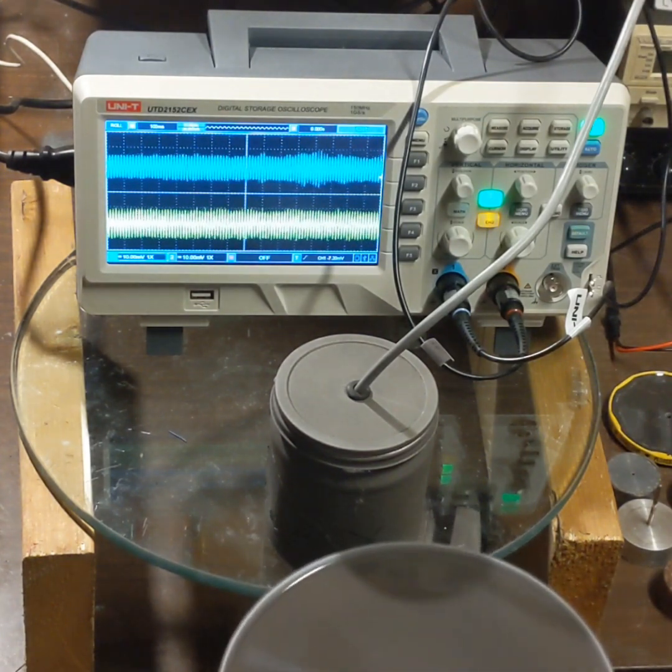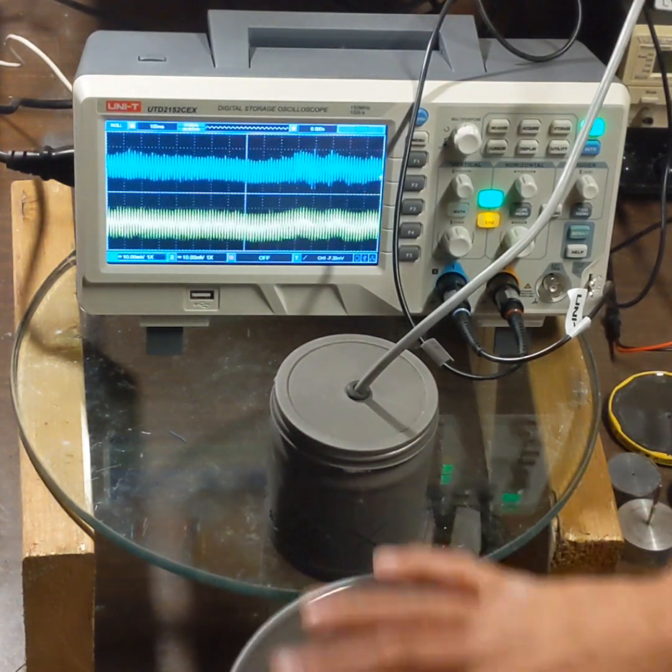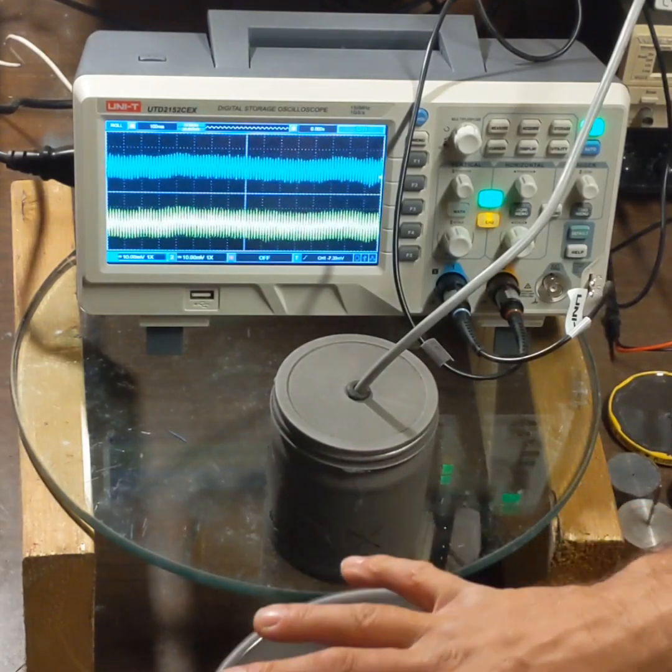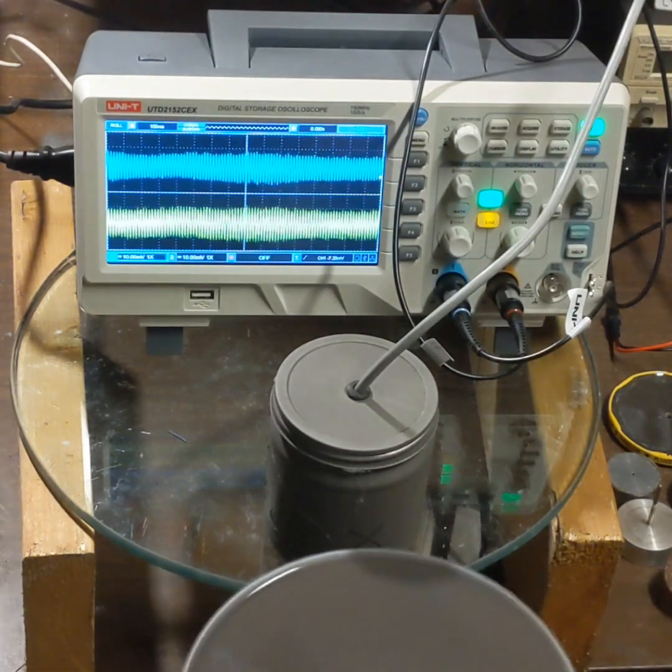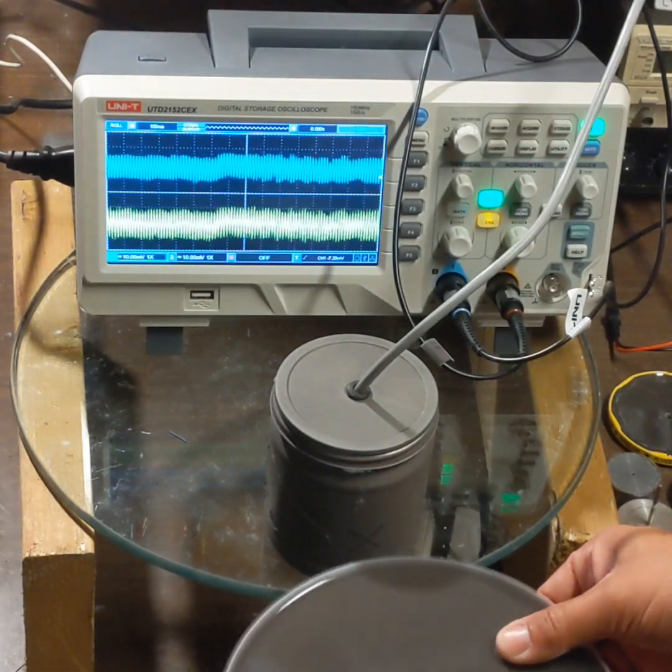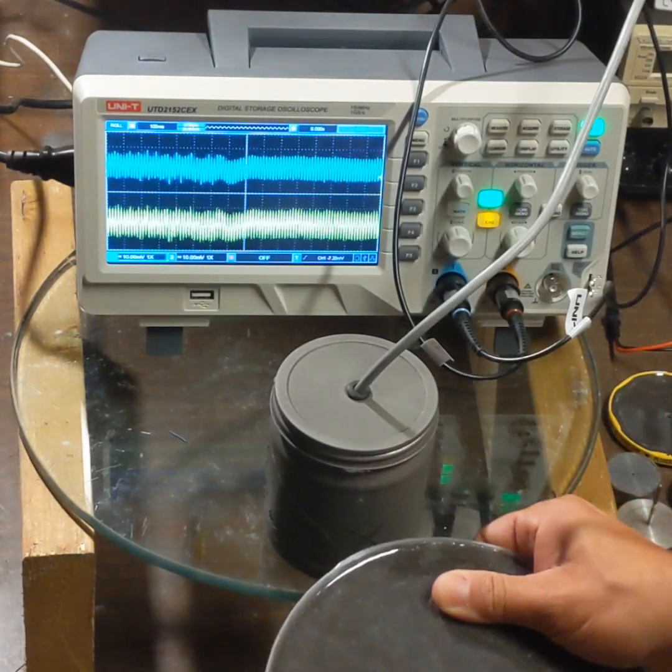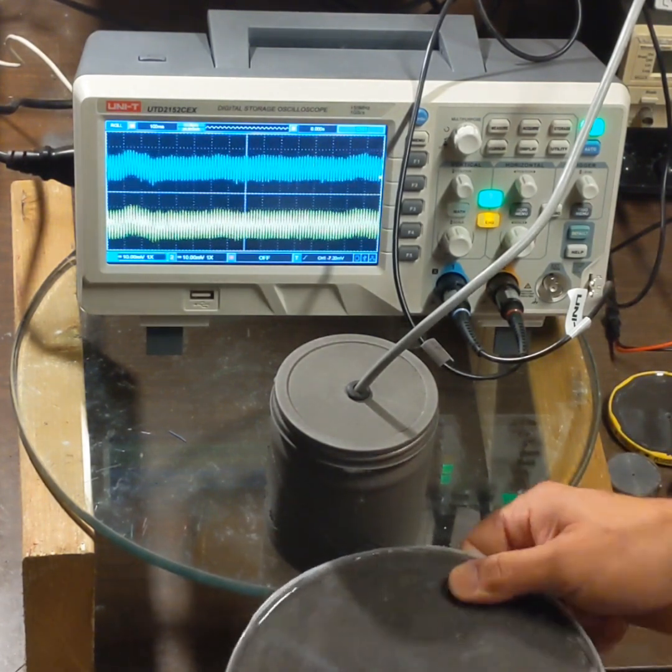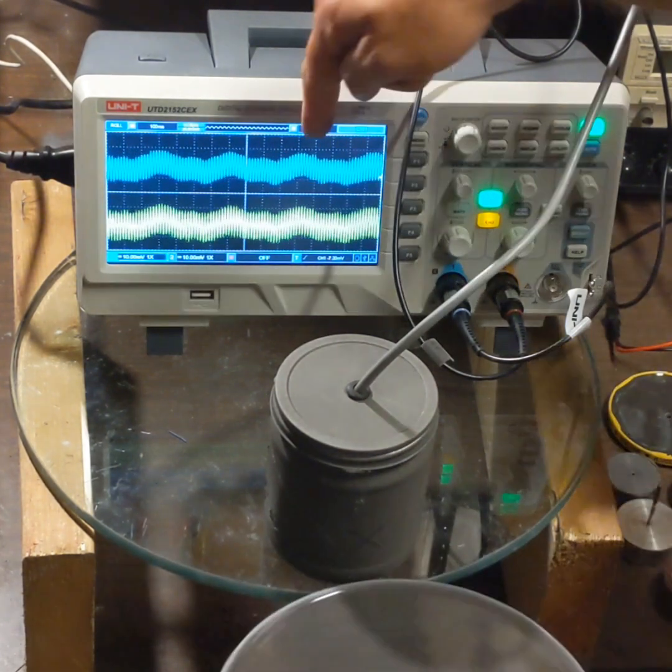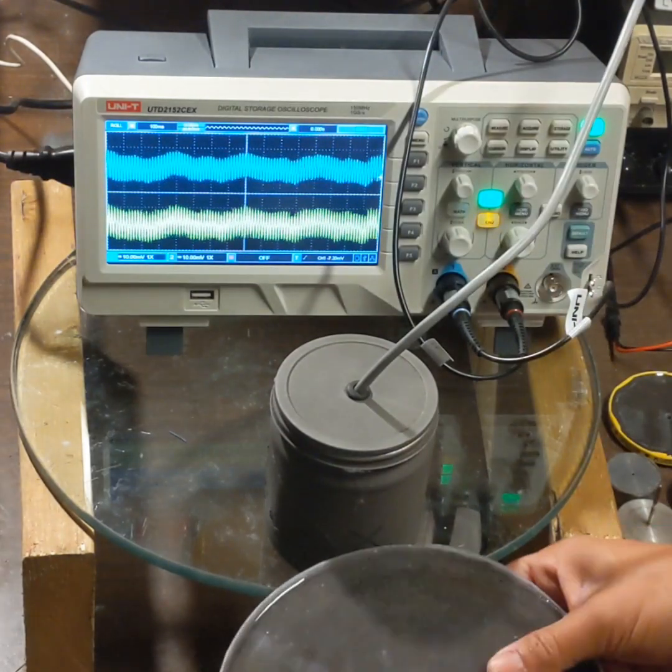One thing I noticed about this is that wobbling is actually important. When this thing is balanced and it's rotating smoothly, there won't be any signal on here. It's important to get a nice little wobble on it. I'll deliberately make it wobbly and you'll see the huge distortion there.